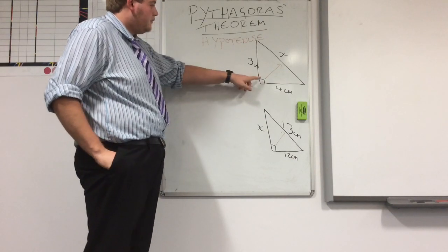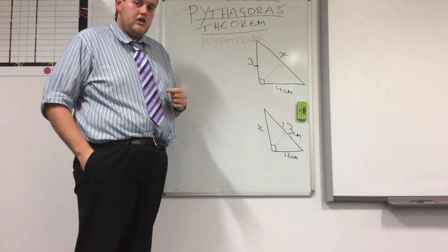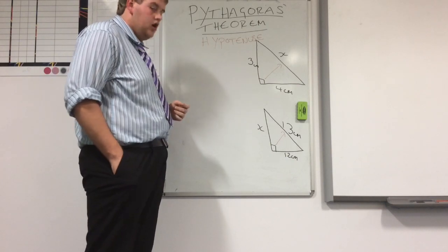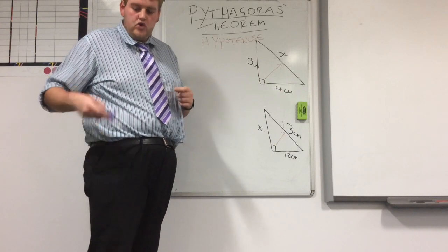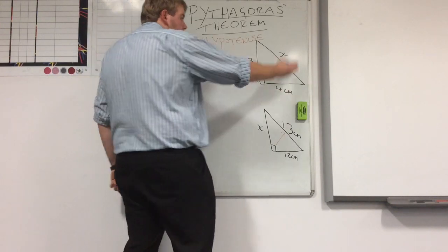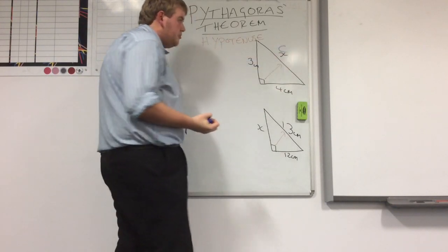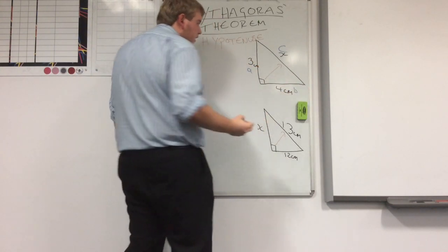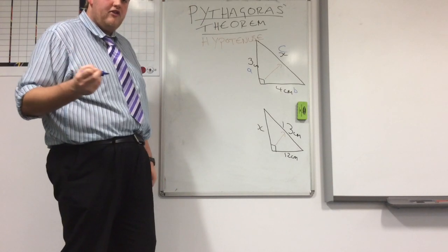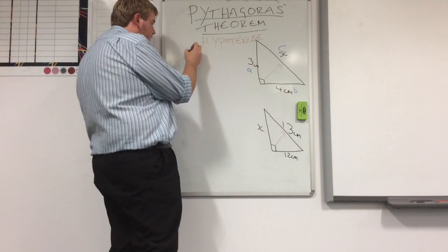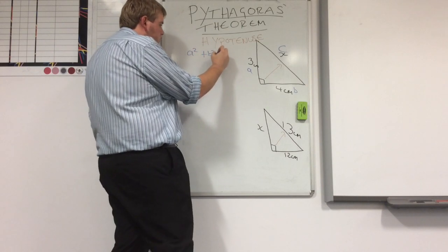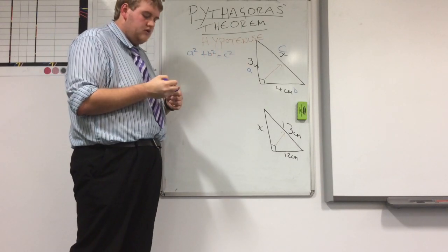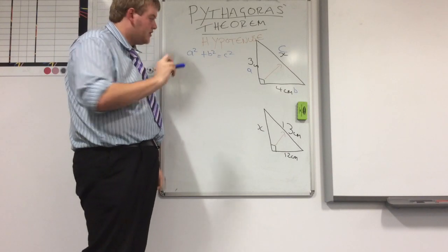Our first triangle. First thing you need to do: label your triangle A, B, and C. Always, always, always label your hypotenuse as C. So start with this one — that's going to be our C. A and B, it doesn't matter where around it is; we've got A and B. The formula for Pythagoras, again, always the same: A squared plus B squared equals C squared. This is when you're trying to find the hypotenuse.